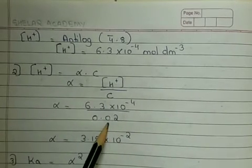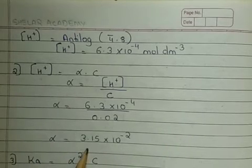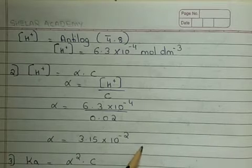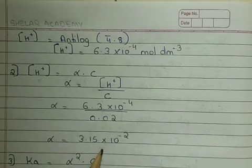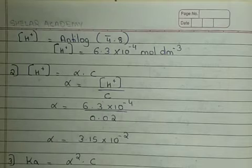So if we simply substitute this value and find it out, the alpha value comes as 3.15 into 10 ratio to the power minus 2. Remember, there is no unit for degree of dissociation because they both are ratio of concentration term.